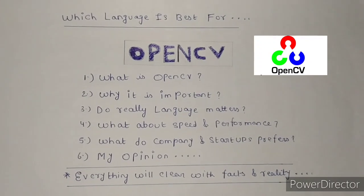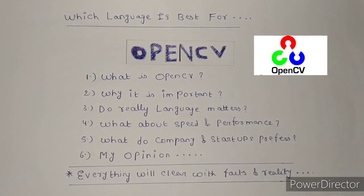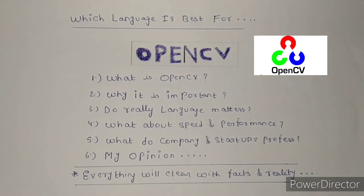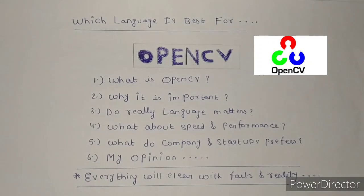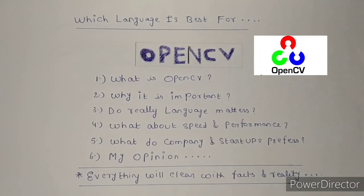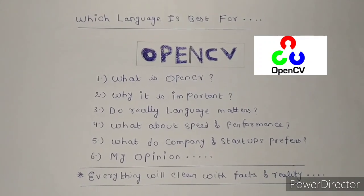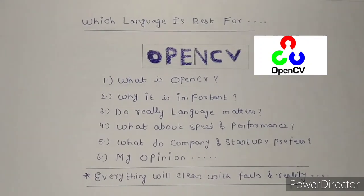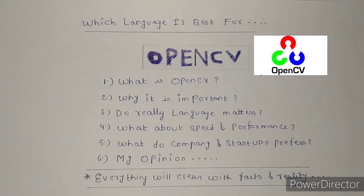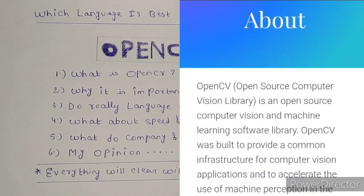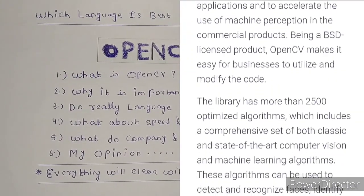One fact about it: this library has more than 2500 optimized algorithms. It is basically used to detect and recognize faces, identify objects, classify human action in videos, track camera movement, and many more. The languages it supports are C++, Python, Java, and MATLAB. We will discuss a clear difference between C++ and Python specifically, because they are the most widely used. I have taken this definition from the OpenCV official website, as you can see on screen.